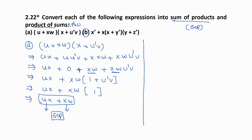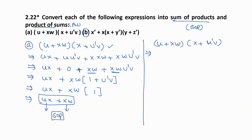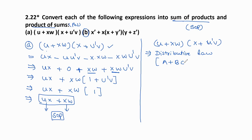Now in the same way we find the POS — product of sums. We rewrite the first expression: u plus x·w, u·x plus u'v. In the SOP we have products, but for POS we need single variables in each sum term. For that we use the distributive law: a plus b·c equals (a plus b) into (a plus c).